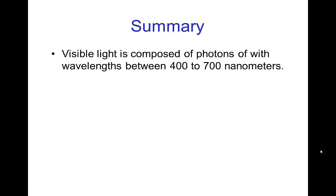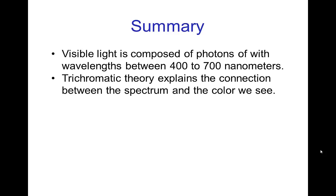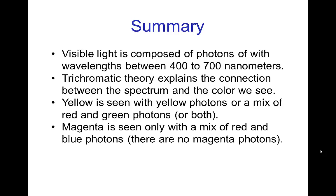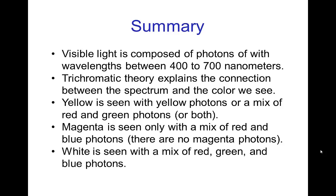In summary: visible light is composed of photons of different wavelengths, in the range of 400 to 700 nanometers. Trichromatic theory explains the connection between the spectrum of light that enters our eye and the color we perceive. Yellow is seen when the spectrum is primarily yellow photons, or a mix of red and green photons. Magenta is a non-spectral color seen only with a blend of red and blue photons — there are no magenta photons. White is another non-spectral color seen when we have a mixture of red, green, and blue — across the full spectrum.